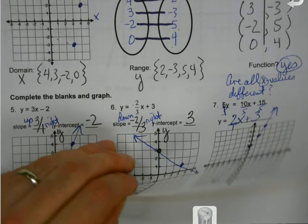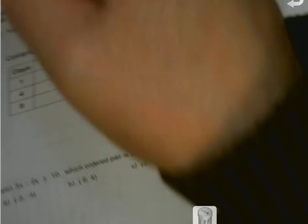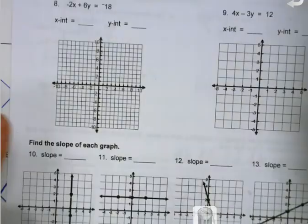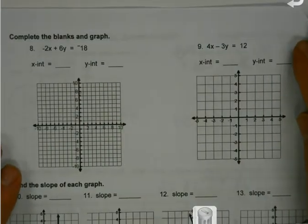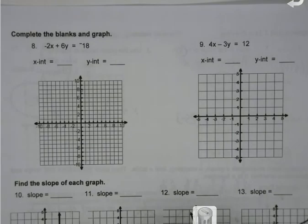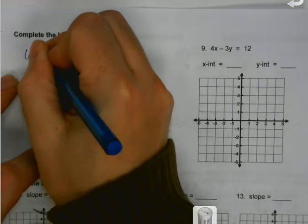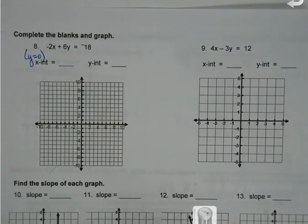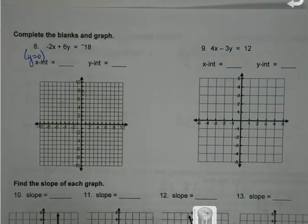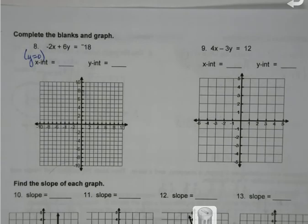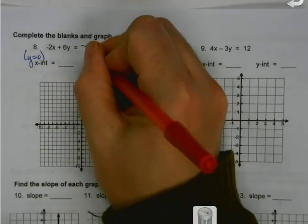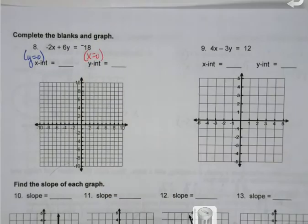We've learned a lot of stuff here in the last couple of weeks — we've got a packet here, just not a sheet. Complete the blanks and graph. Intercepts reminder: when we're looking for my x-intercept, I use y equal to 0. And when I'm using my y-intercept, I use x equals 0.